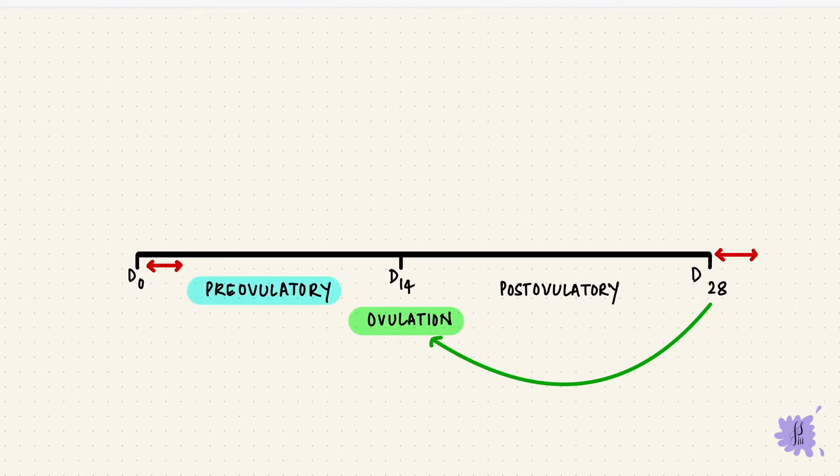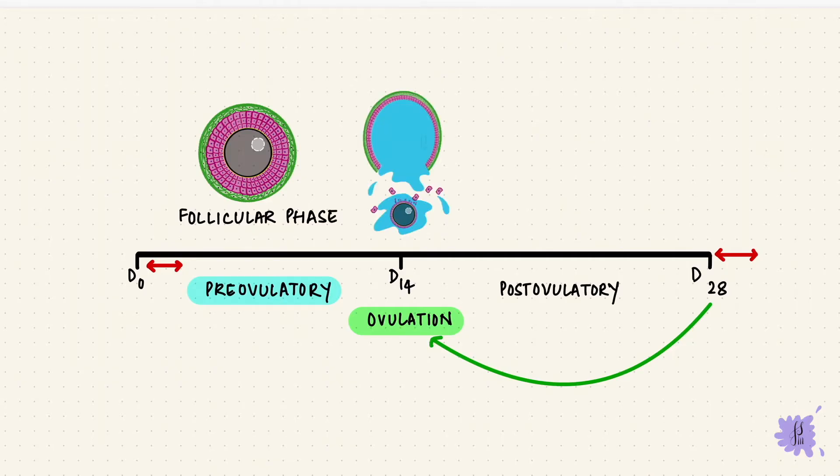Before ovulation, the ovarian follicles grow and mature. That is folliculogenesis, making this the follicular phase. At ovulation, the follicle ruptures, releasing the oocyte inside, and the follicle becomes a corpus luteum, making this part of the cycle the luteal phase.